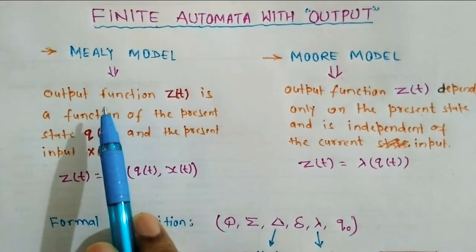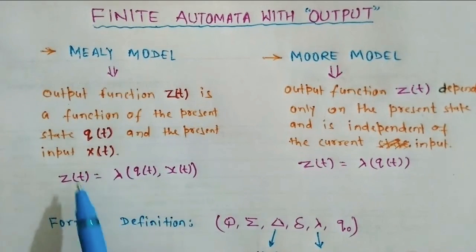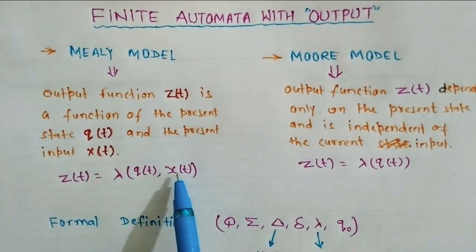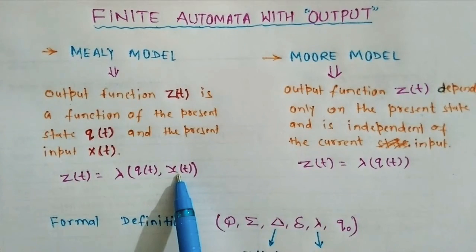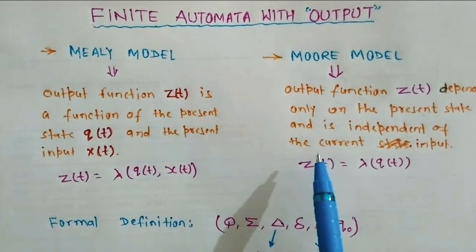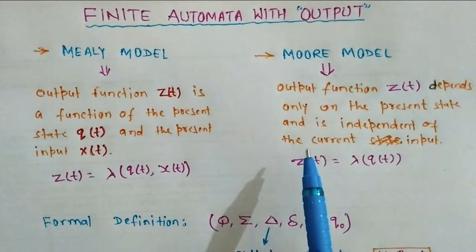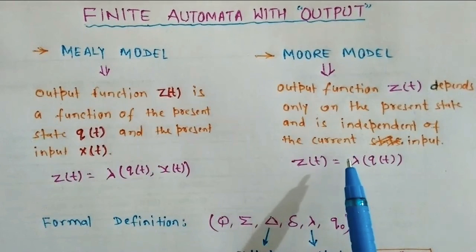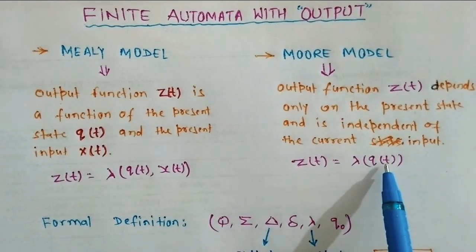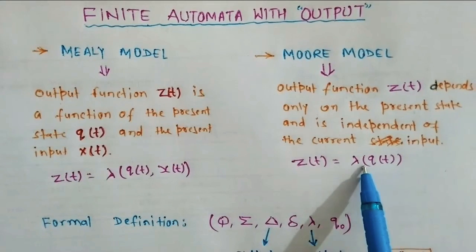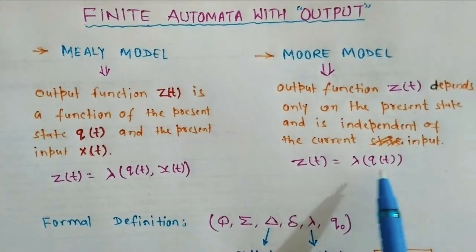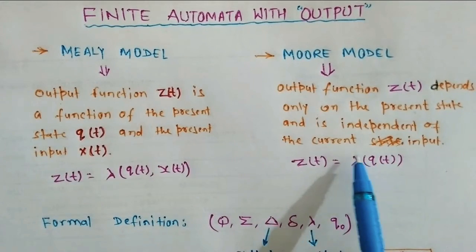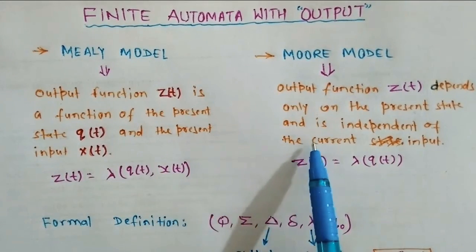The Mealy model says the output function depends on the present state and the present input. But in the Moore machine, the output function depends on the present state only — or we can say it is independent of the current input. This is the basic understanding of the Mealy and Moore machine.